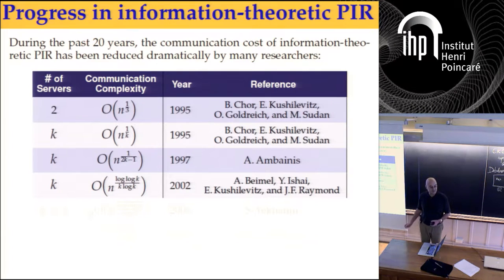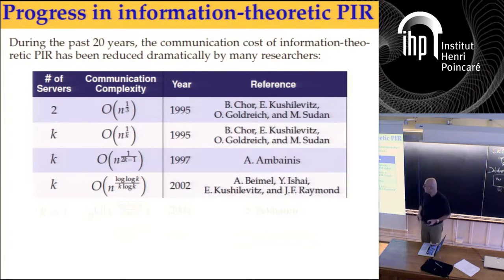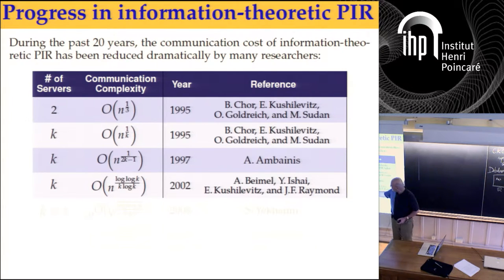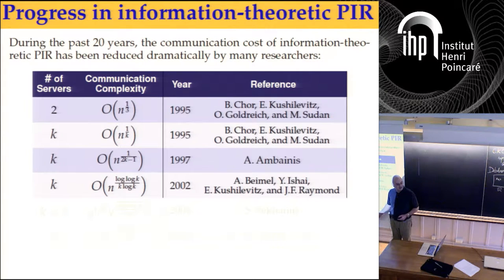The first major breakthrough is due to two people here in the audience: Amos Bemel and Yuval Ishai. Their result was polynomial in k, and better than 1 over 2k.